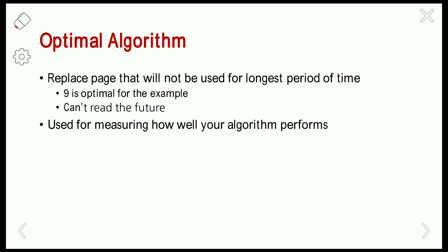In the case of FIFO, the oldest page frame is replaced — that means we are checking the past. But in the Optimal Algorithm, we are going to check the future and reference the upcoming pages. In LRU, we check the oldest frames based on recently used frames. The Optimal Algorithm is the only algorithm that gives the least number of page faults.